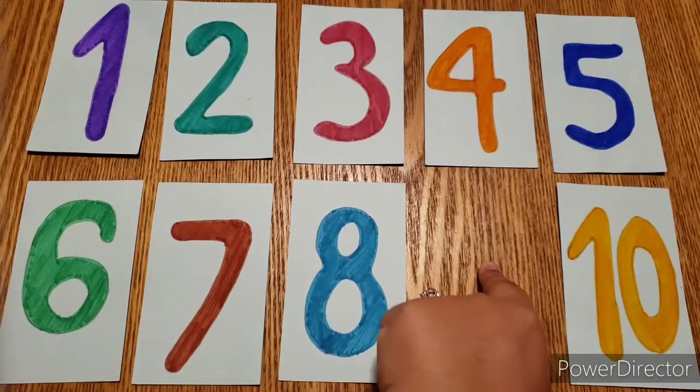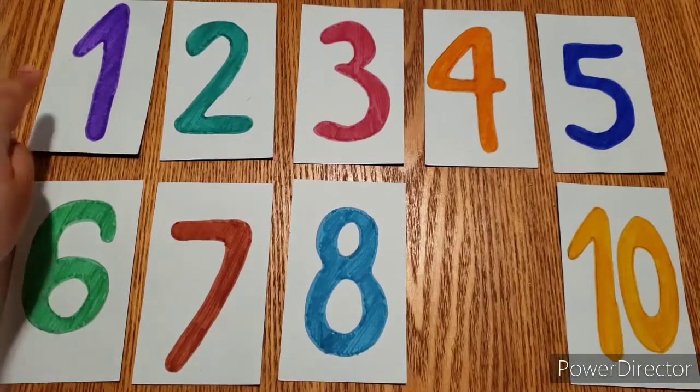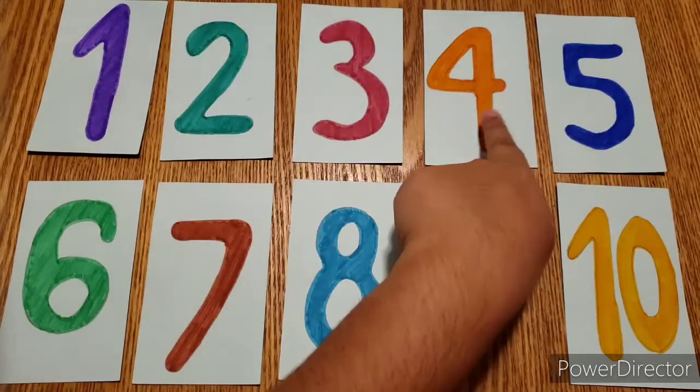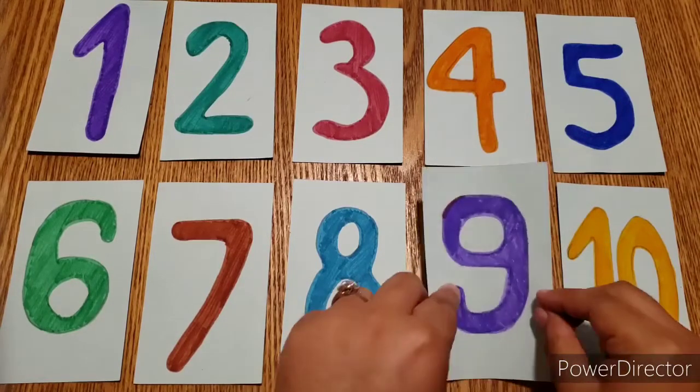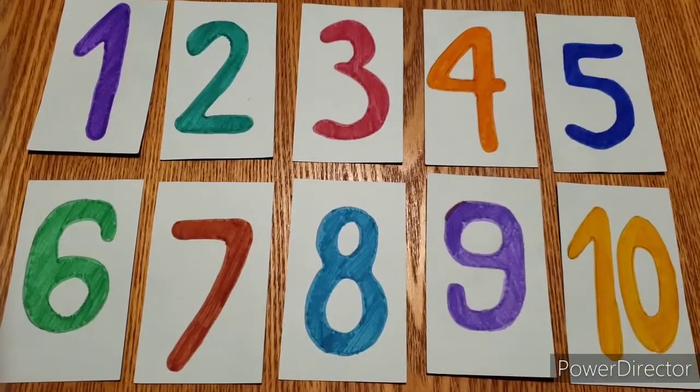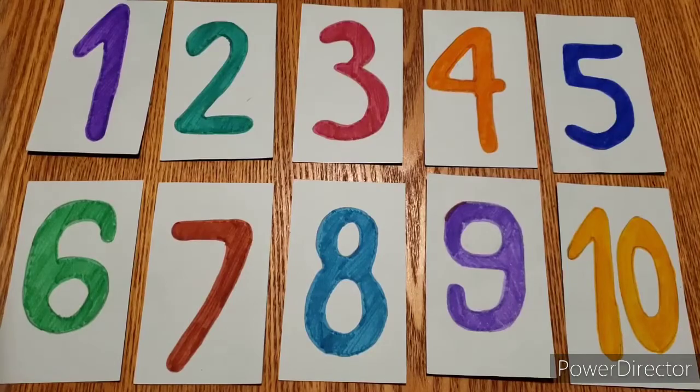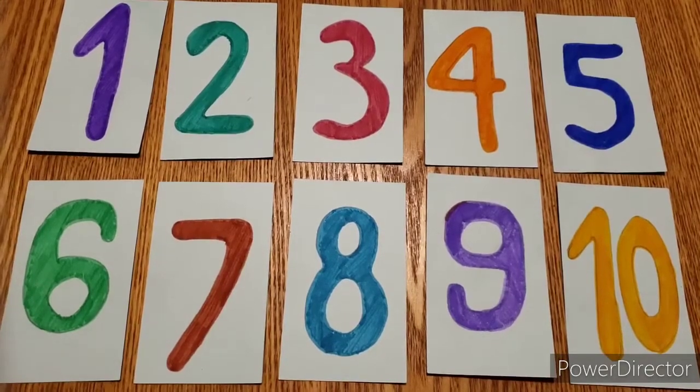Now what goes here? One, two, three, four, five, six, seven, eight, nine, and ten. So these are the numbers one through ten.